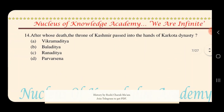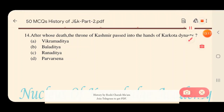Question 14: After whose death did the throne of Kashmir pass into the hands of the Karkota dynasty? Options: A) Vikramaditya, B) Baladitya, C) Ranaditya, D) Pravarsena. The answer is option B — Baladitya. After Baladitya's death the throne passed to the Karkota dynasty.